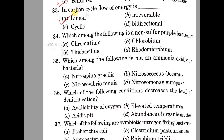Question number 34. Which among the following is a non-sulphur purple bacteria? Option A: Chromatium, B: Chlorobium, C: Thiobacillus, D: Rhodomicrobium. The correct answer is option D, Rhodomicrobium.